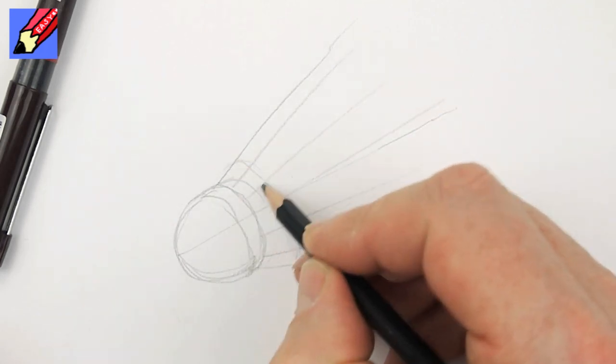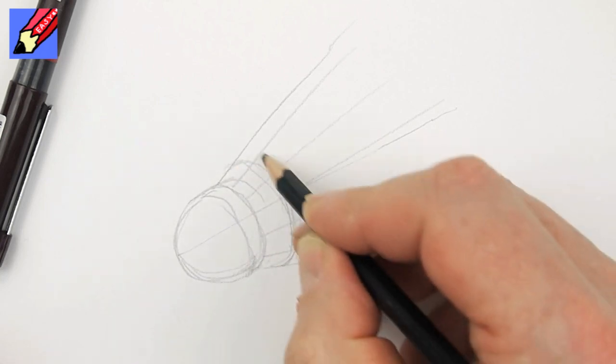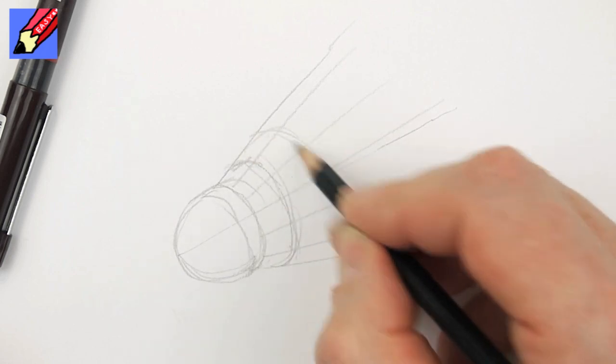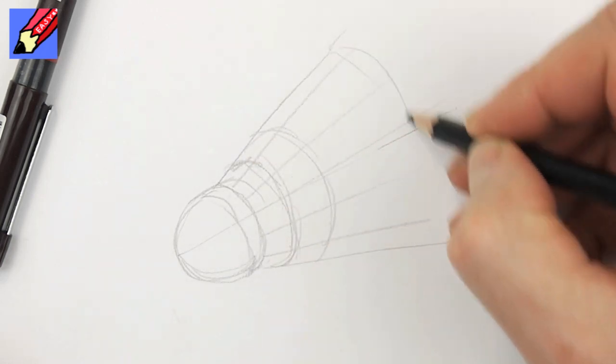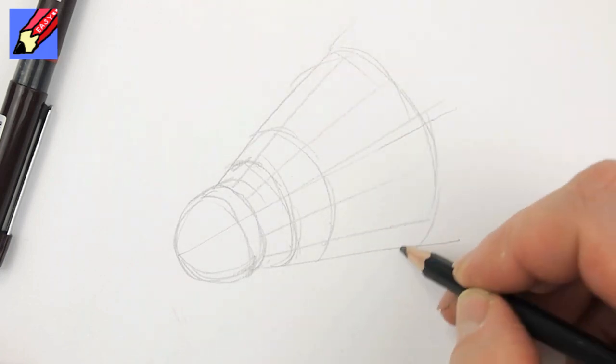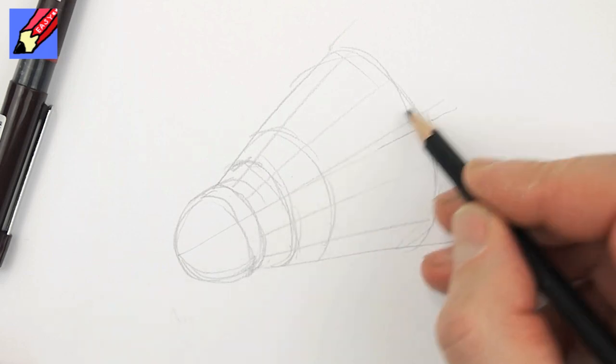You're going to have two bits of string that tie it all together like that. Then you want to kind of mark out where the feathers are all going to finish, about like that.